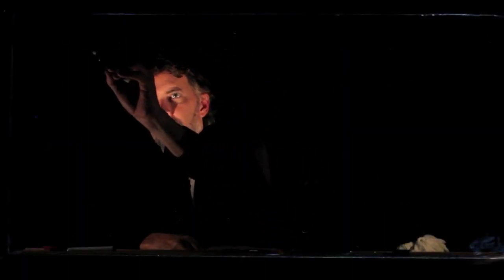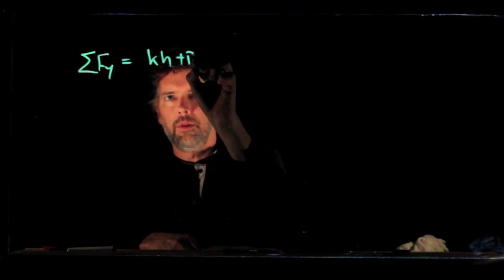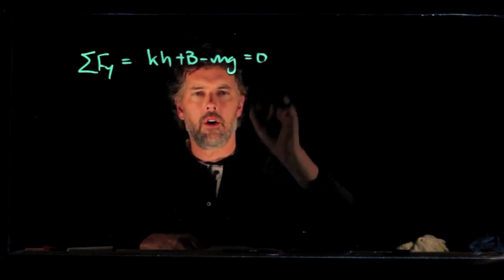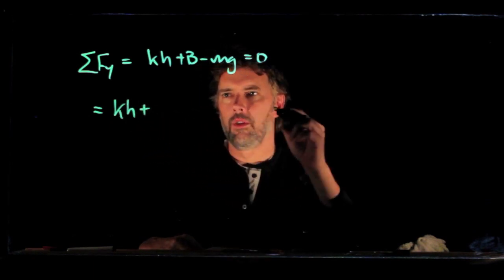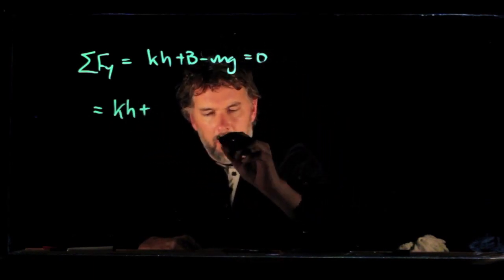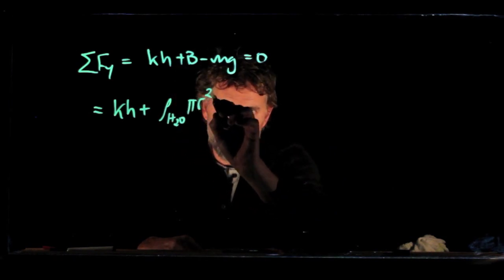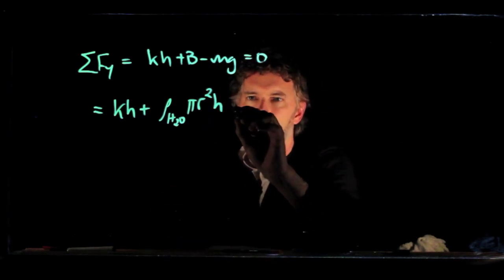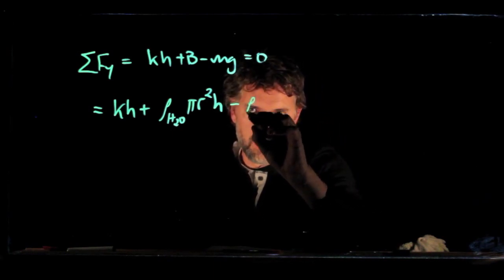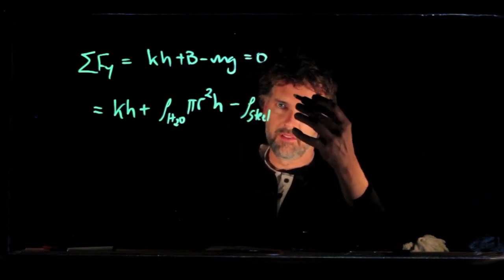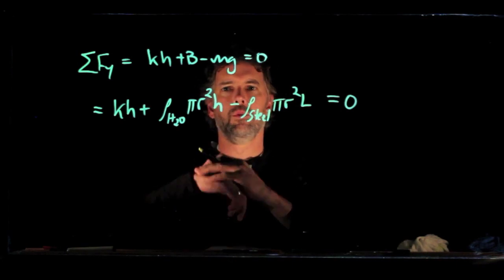Okay, so let's start with our equation. We had sum of the forces in the y direction was kh plus b minus mg. All that was equal to 0, and now we can substitute in what we wrote for the buoyant force b. We said that was density of the water times pi r squared h. We're going to subtract mg, which was rho of the cylinder. Let's call it steel, times pi r squared times l. All of that equals 0.